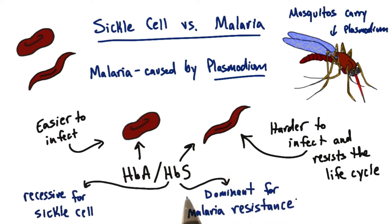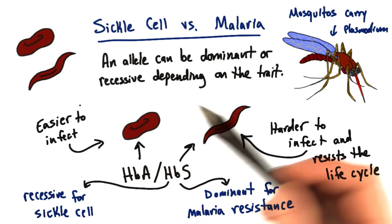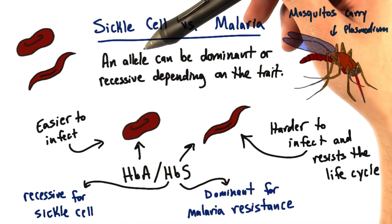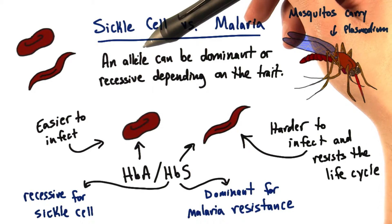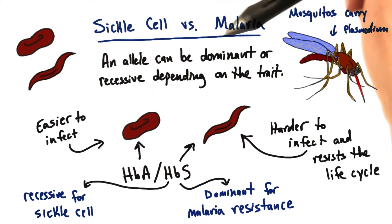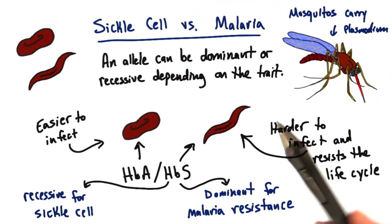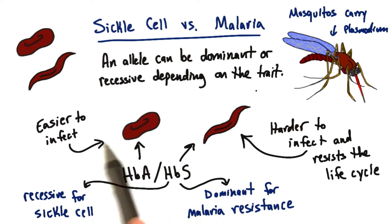So although the HBS allele is recessive for sickle cell anemia, it's actually dominant with regards to malaria resistance. This means that an individual allele could be dominant or recessive, depending on which trait you're looking at.